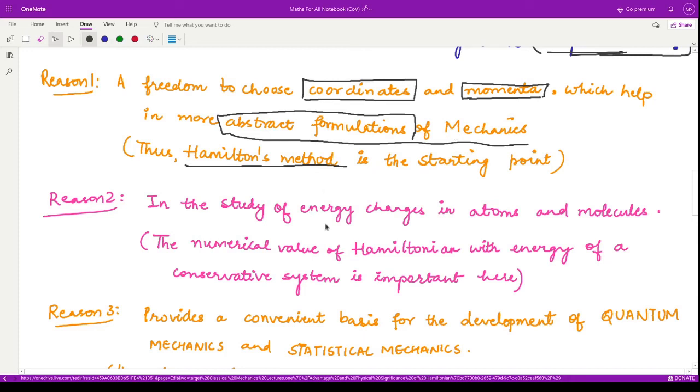The next reason is that in the study of energy changes in atoms and molecules, the forces cannot be directly calculated. Moreover, the force of constraints become meaningless when we talk about such small atoms and molecules. In order to study the energy changes, we take use of these Hamiltonian approaches where the numerical value of this Hamiltonian represents the energy of the system.